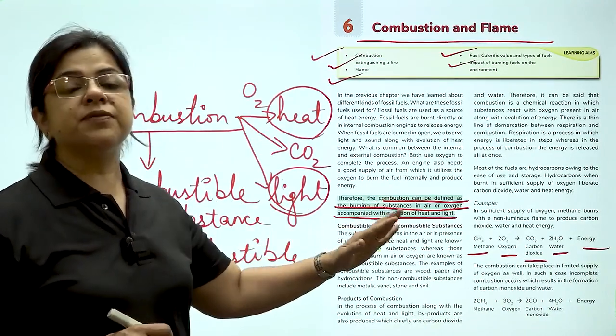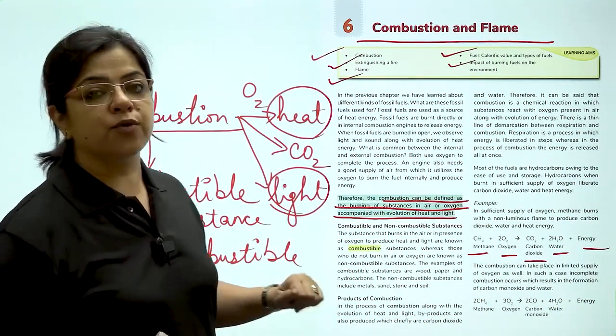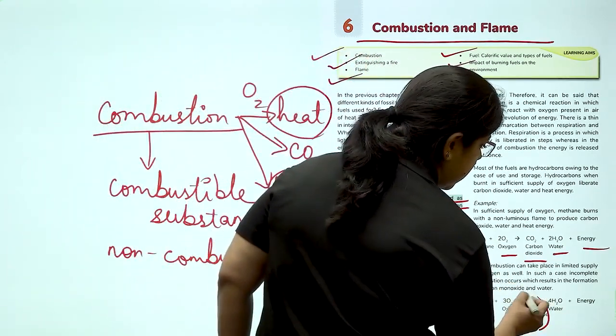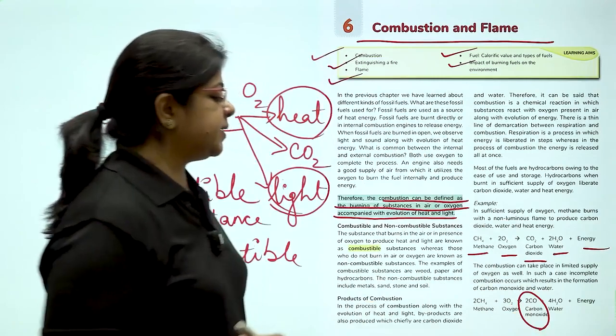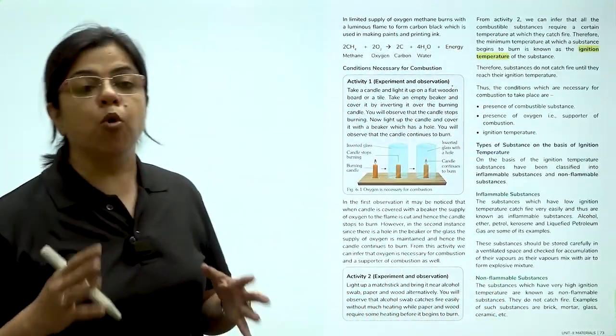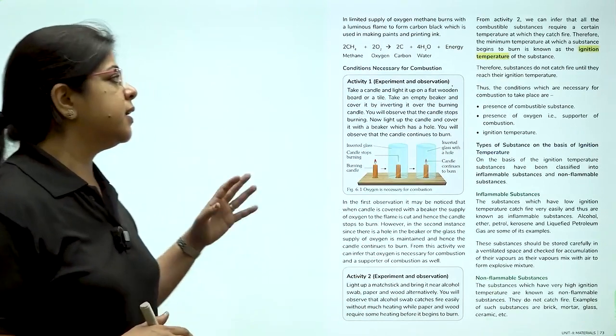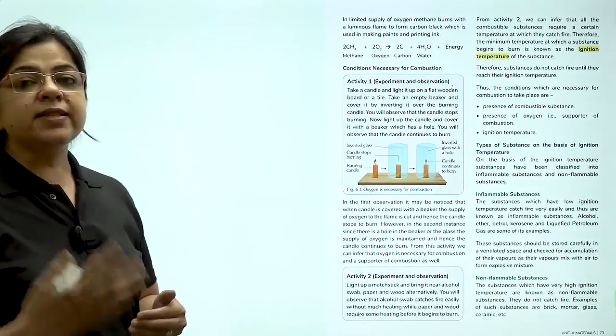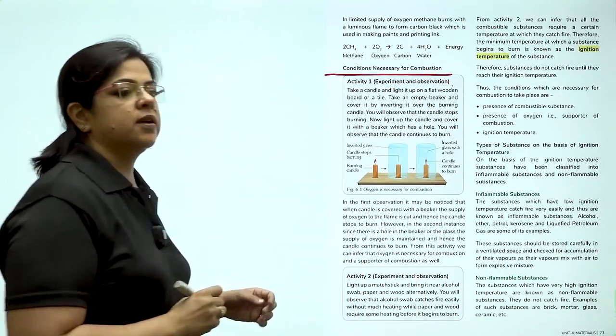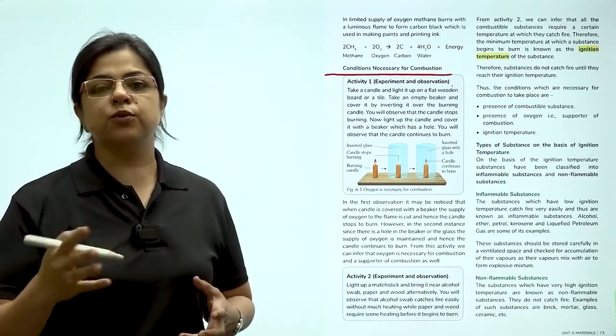What happens if there is insufficient supply of oxygen? As you can see from the same equation, carbon monoxide is formed. So carbon monoxide is more dangerous than carbon dioxide. Now let us talk about conditions necessary for combustion. Let us understand with a few experiments.